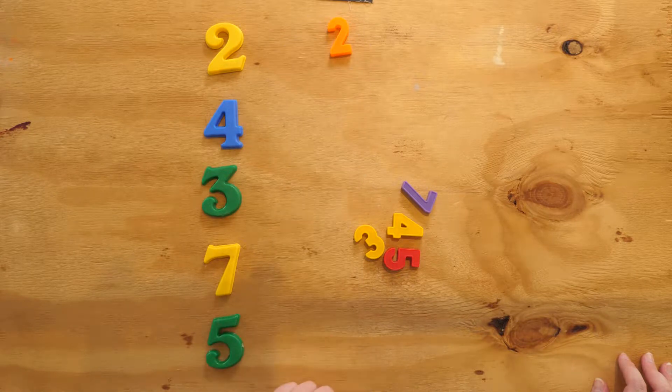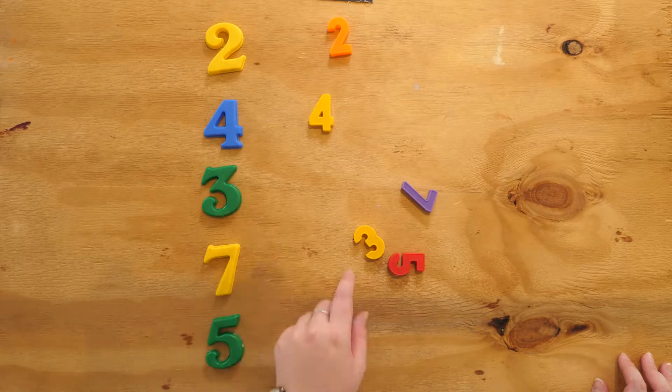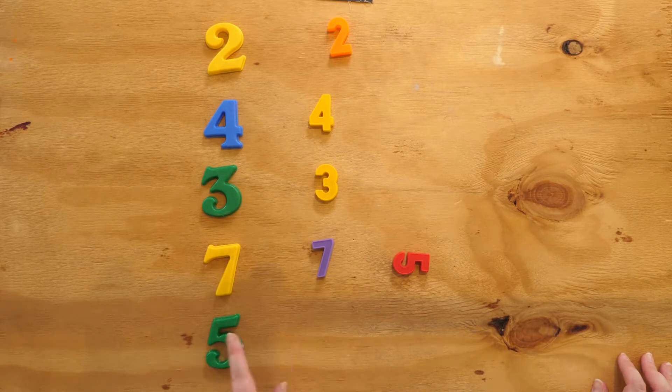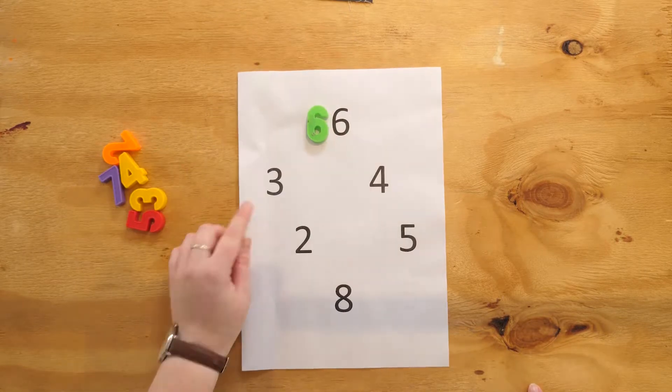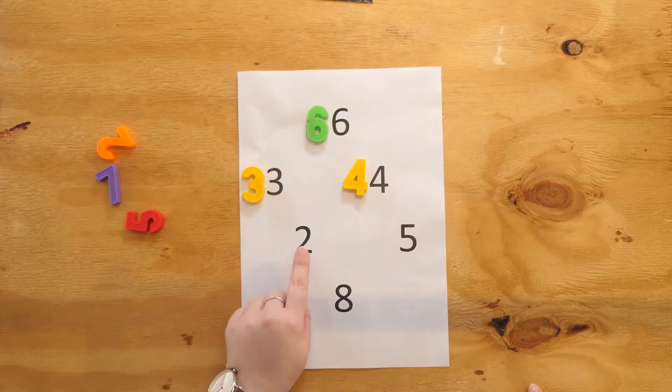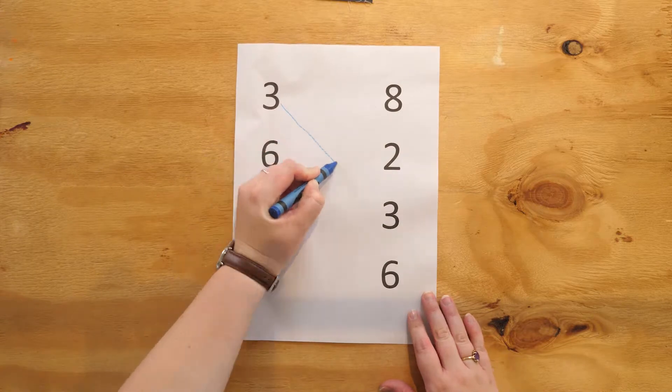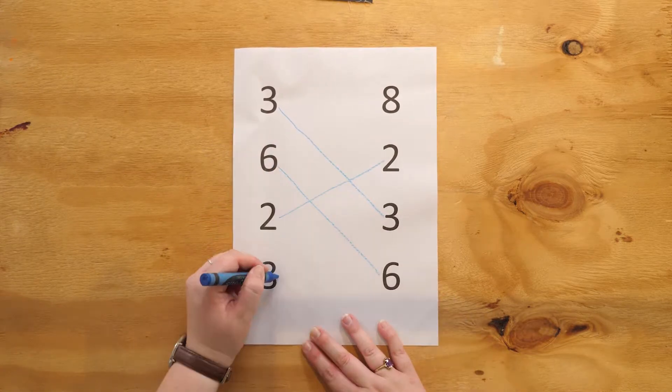Number matching games which can be graded in terms of the level of difficulty. Start with three-dimensional numbers such as fridge magnets, and then grade it up by matching three-dimensional numbers to their two-dimensional counterparts, and finally matching two-dimensional numbers.